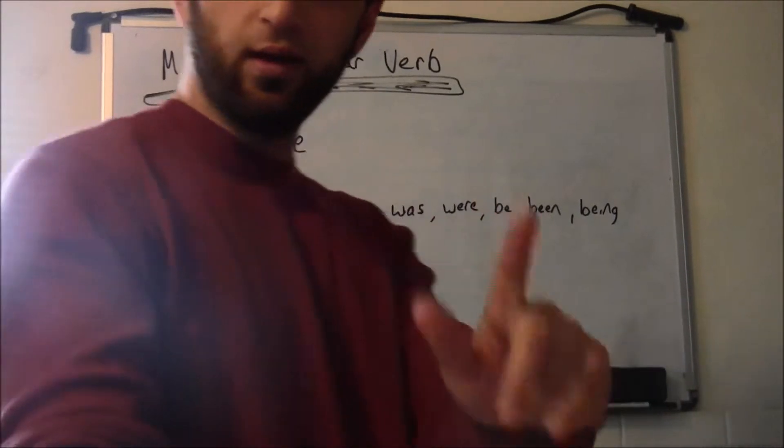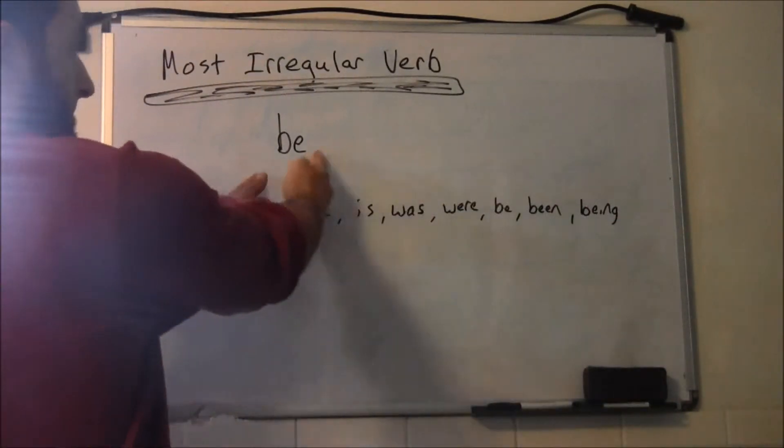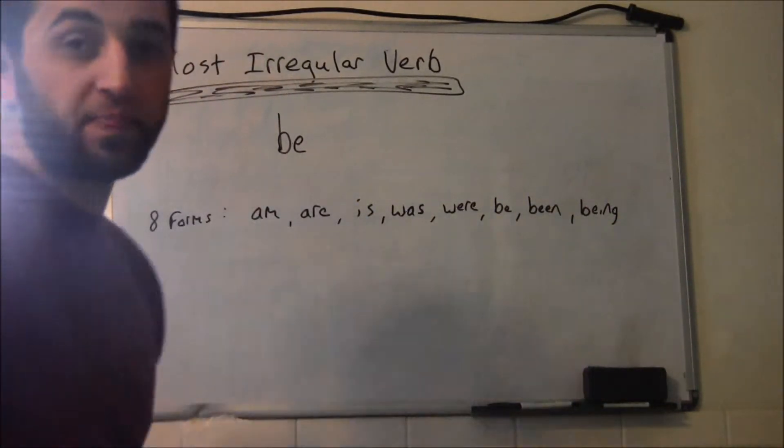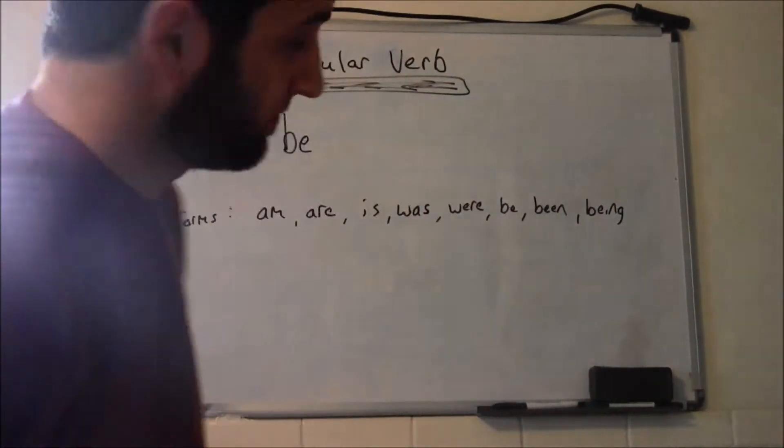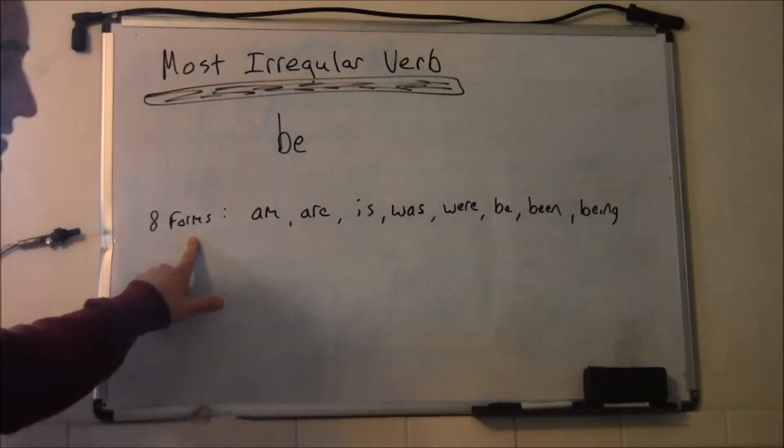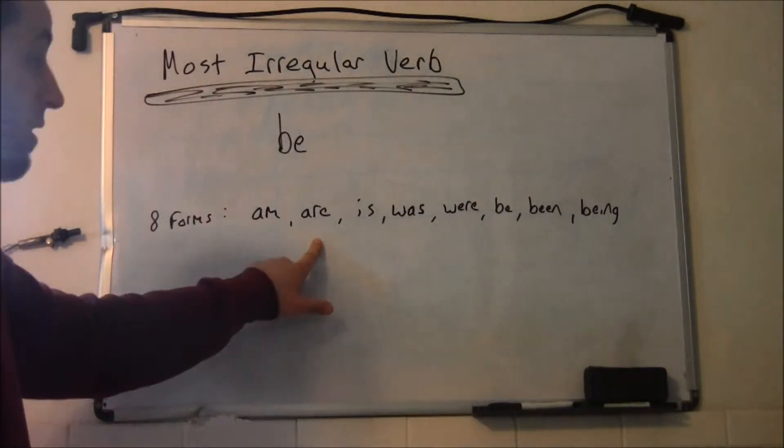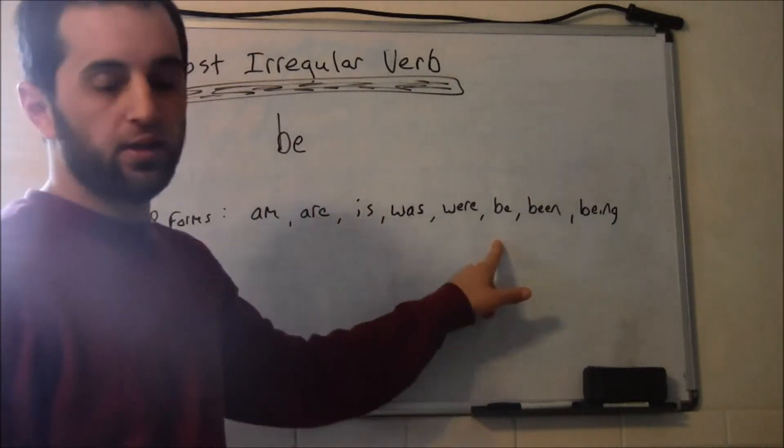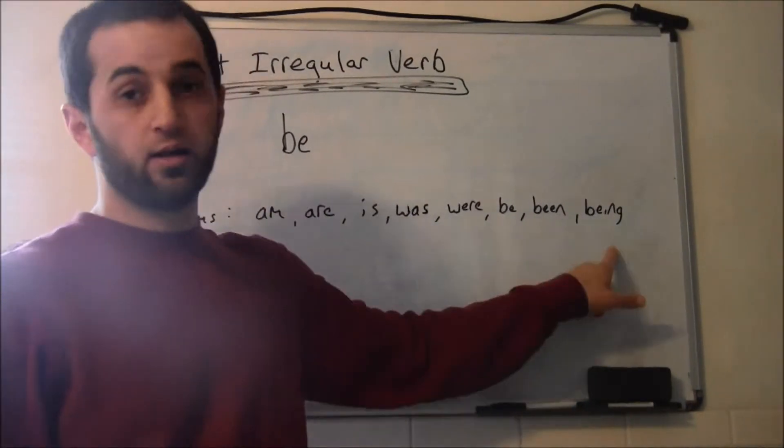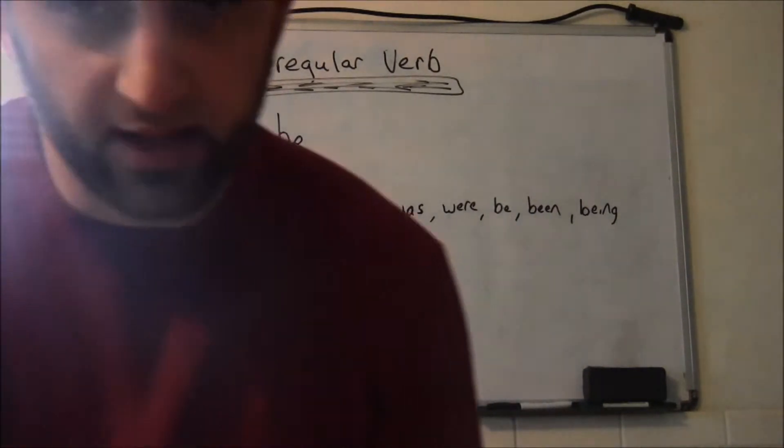The word is be. Be, the most irregular verb in the English language, it has eight forms. Eight forms: am, are, is, was, were, be, been, and being. That has eight forms.